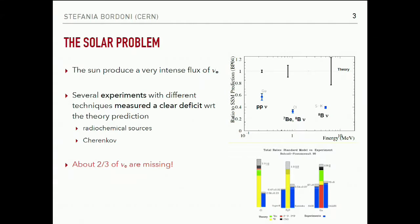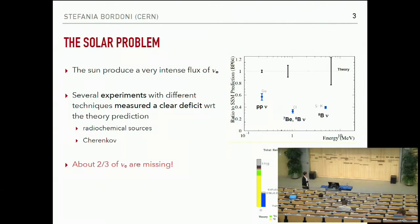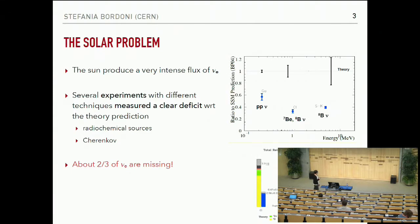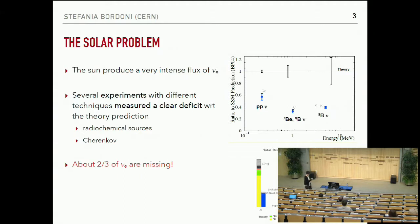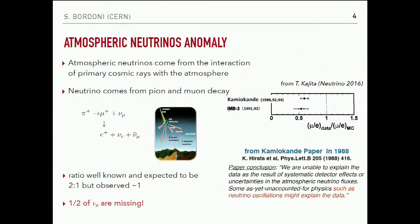This plot shows more or less the same kind of results. You have the expectation in yellow and green depending on which are the sources for the solar neutrino, and what the different experiments observed are the blue columns. For example, the experiment with chlorine, or Super-Kamiokande, Kamiokande, SAGE, and GALLEX with gallium.